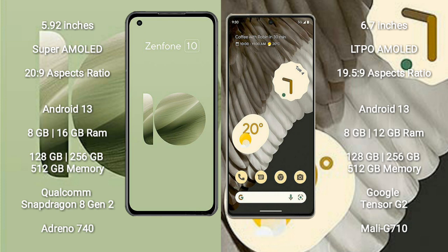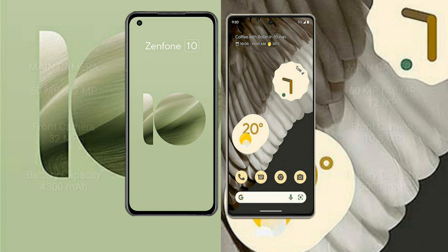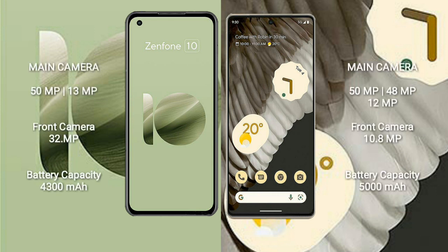The Asus Zenfone 10 comes with 8GB or 16GB RAM and 128GB, 256GB, or 512GB internal storage, powered by the Qualcomm Snapdragon 8 Gen 2 processor with Adreno 740 GPU. The Google Pixel 7 Pro comes with 8GB or 12GB RAM and 128GB, 256GB, or 512GB storage, powered by the Google Tensor G2 processor with Mali-G710 GPU.